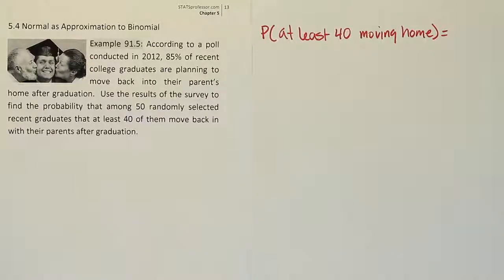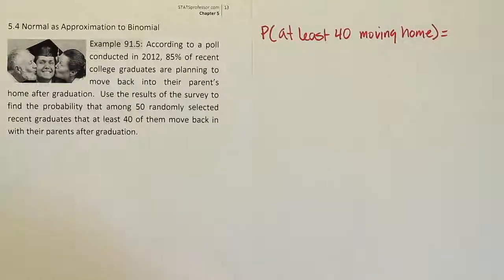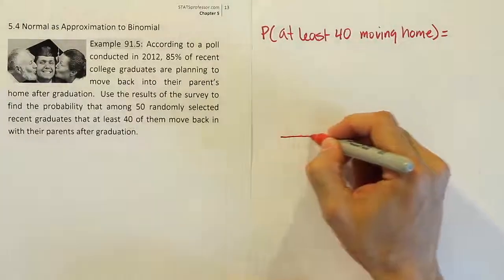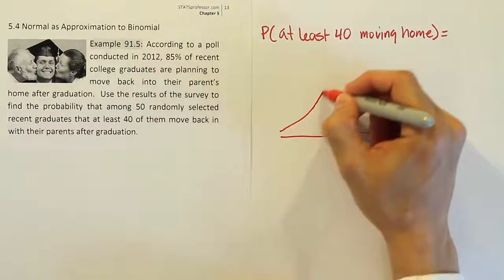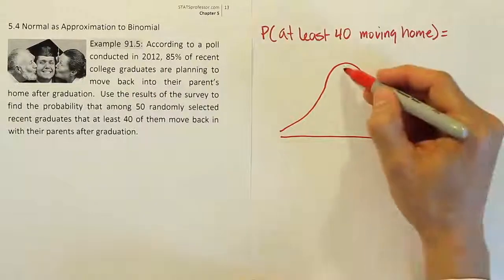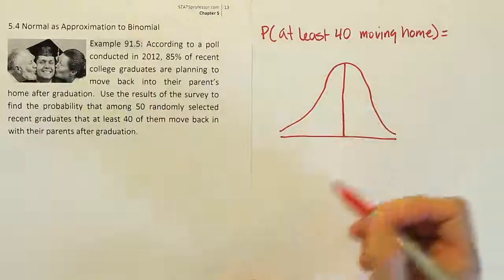This is where the binomial approximation comes in. By using the normal approximation technique, using the bell curve to approximate the binomial probability, we can get this answer by handling it like it's a bell curve problem. What we're going to do is draw the curve. The reason we know to do this is simply because the problem is unmanageable otherwise. Without software, this is very difficult.